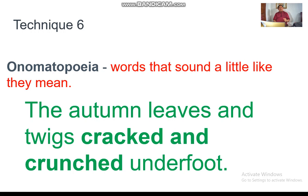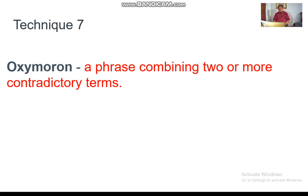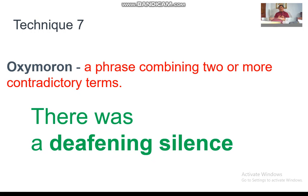The next technique is oxymoron. It is a phrase combining two contradictory terms — contradictory means the opposite. Look at the example: 'There was a deepening silence.' Silence means you don't hear anything, but 'deepening' suggests a sound that makes your ears work very hard — so it is a contradictory phrase.